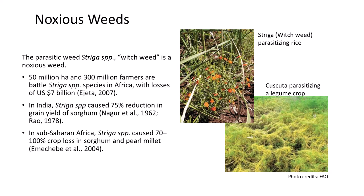Most Cuscuta is in East Africa. Germinating Cuscuta seeds attach to an appropriate host within three to five days of germination and siphon water and nutrients from the host.